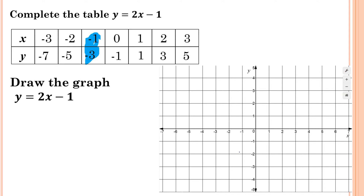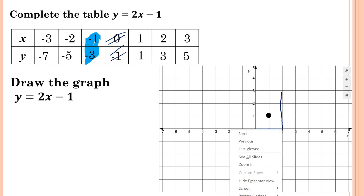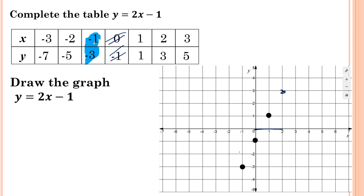So for negative 1 and negative 3, I go left 1 from the origin and then go down 3 — that's the first point. For 0, negative 1, I start at the origin, don't go across, just go straight down 1. For 1, 1, I go across 1 and up 1. And for 2, 3, from the origin I go 2 to the right and then up 3.